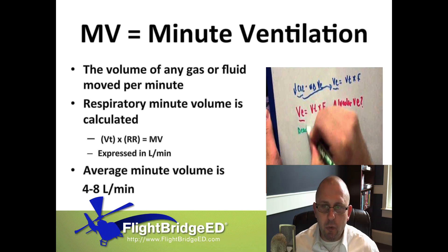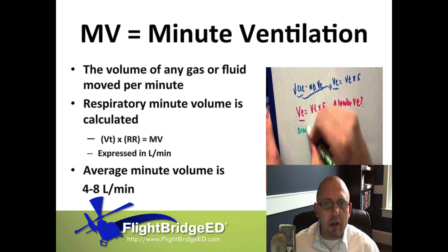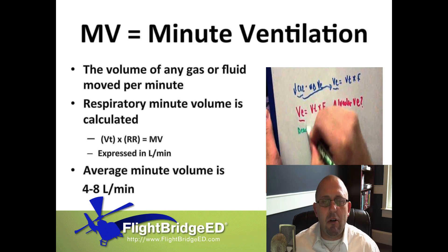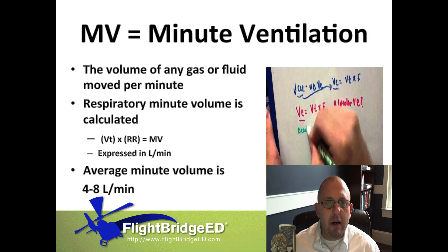Respiratory rate is going to be based on the overall lung protective strategy — whether we're looking at an injury approach or an obstructive approach, which we'll cover in later videos. Our respiratory rate is based on the approach, but how do we come up with the set rate? We have to understand that our minute ventilation needs are very similar — if not identical — to our cardiac output needs, which are four to eight liters per minute.